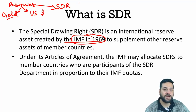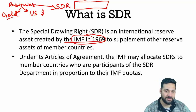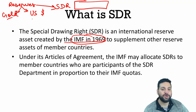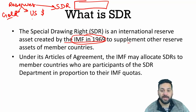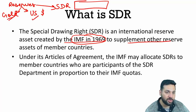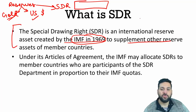SDR is a basket of five currencies, which we are going to discuss in the next slides. The purpose of SDR is to supplement other reserves — to supplement the gold and US dollar reserves.